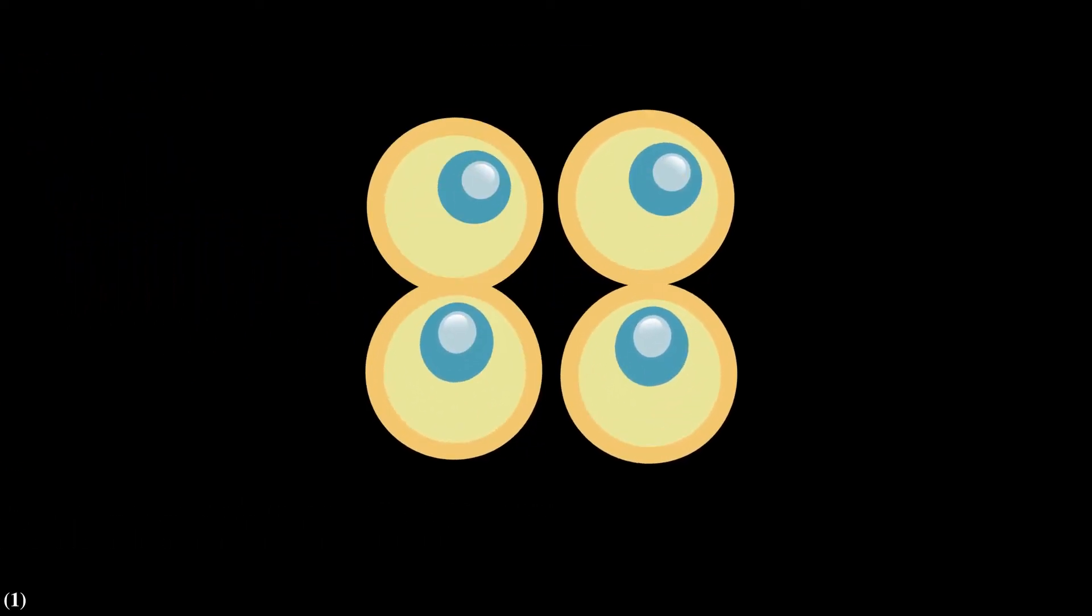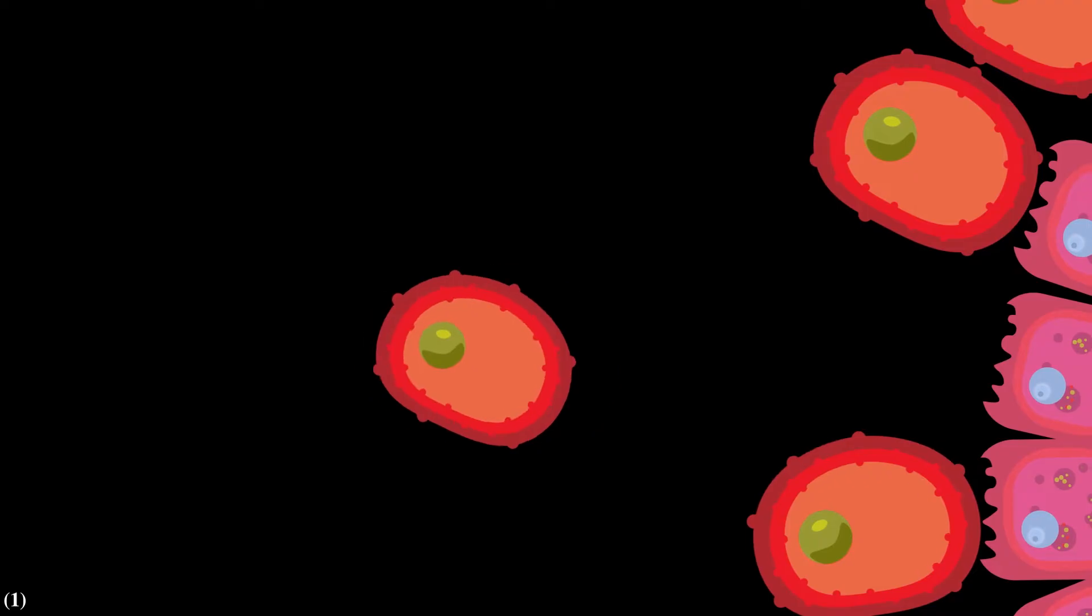For making a tissue, first our stem cells should proliferate, which means they should make more of themselves, and they should differentiate to other type of cells which are more specified to do various specific jobs.